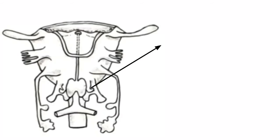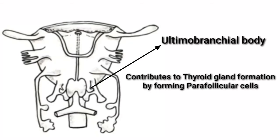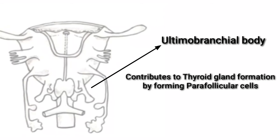Development of the thyroid gland from the first source, that is the thyroglosal duct, is complete. Now, development from the second source, that is the ultimobranchial body, which is the component of the caudal pharyngeal complex. This ultimobranchial body contributes to thyroid gland formation by forming parafollicular cells.